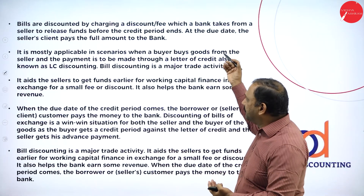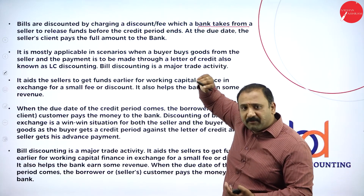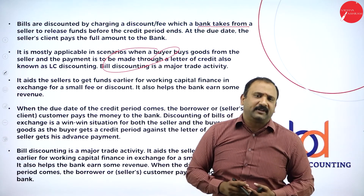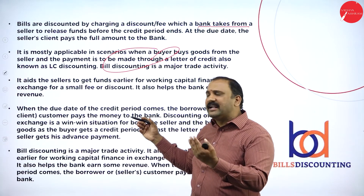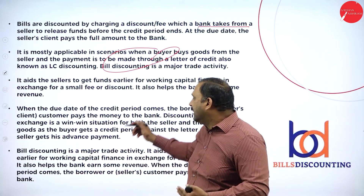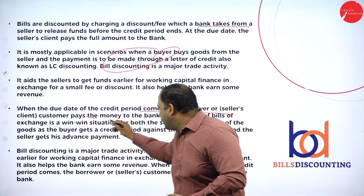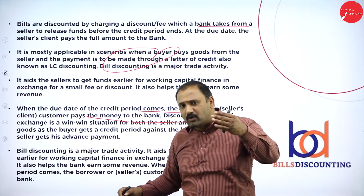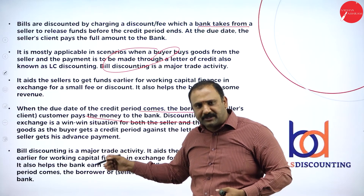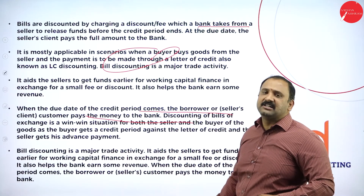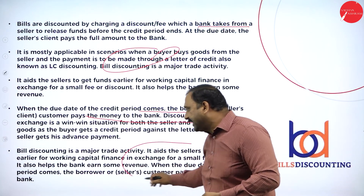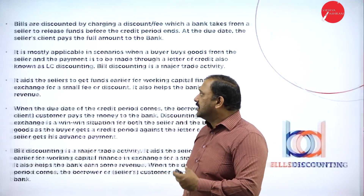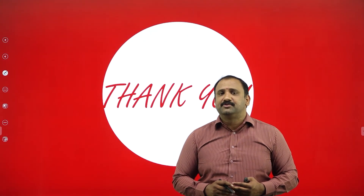Bills are discounted at a fee charged by the bank before it releases the funds — also called letter of credit discounting. It aids the seller in getting funds earlier for working capital, and when the due date of the credit period arrives, the borrower pays the money to the bank. The discounting is a win-win arrangement: the seller and buyer get goods on a credit period, and with the letter of credit, they can make advance payment and finish the deal quickly. Bill discounting is a trade activity that helps in getting earlier working finance and moving faster.